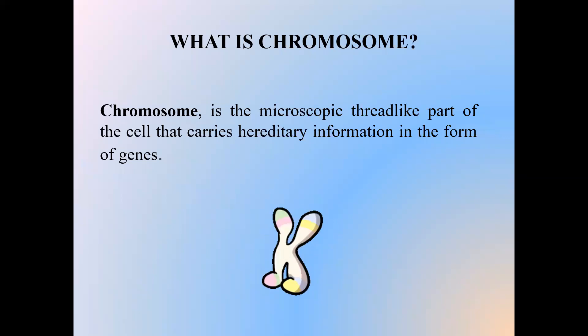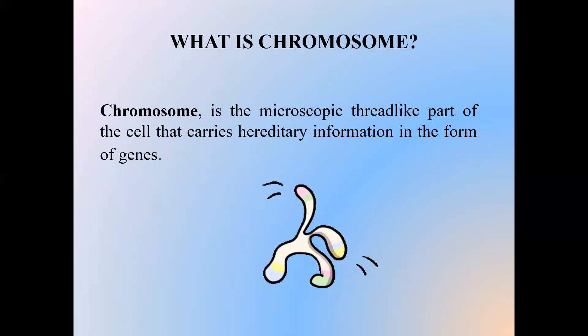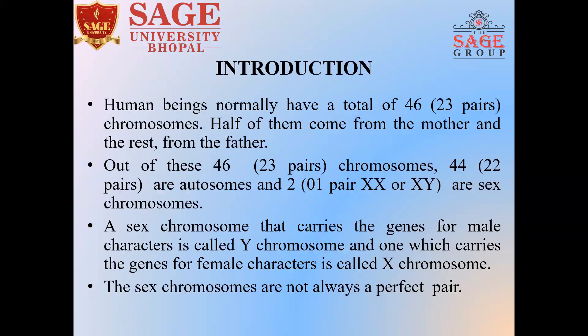What is a chromosome? A chromosome is a microscopic thread-like part of the cell that carries hereditary information in the form of genes. Normally, human beings have a total of 46, or 23 pairs of chromosomes. Half of them come from the mother and the rest from the father. Out of these 46 chromosomes, 44 or 22 pairs are autosomes and one pair are sex chromosomes. The sex chromosome that carries genes for male characteristics is called the Y chromosome, and the one which carries genes for female characteristics is called the X chromosome. The sex chromosomes are not always a perfect pair — sometimes they are XX and sometimes XY.